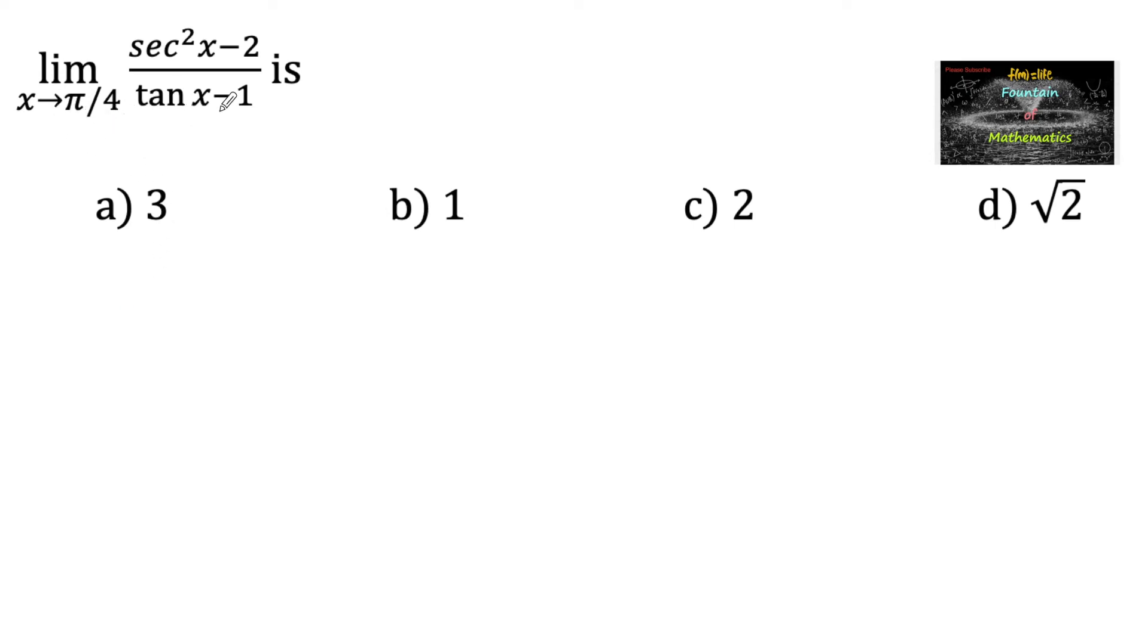Limit as x approaches π/4 of secant squared x minus 2 upon tan x minus 1. We know that secant squared theta equals 1 plus tan squared theta, so let us write limit as x approaches π/4, secant squared x we can write as 1 plus tan squared x minus 2 upon tan x minus 1.